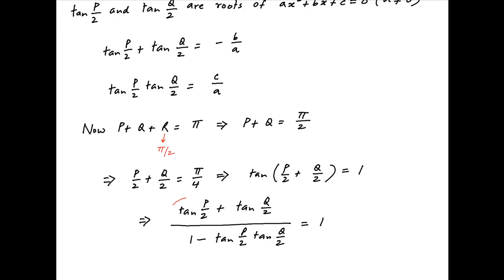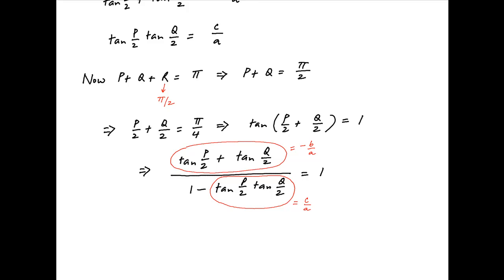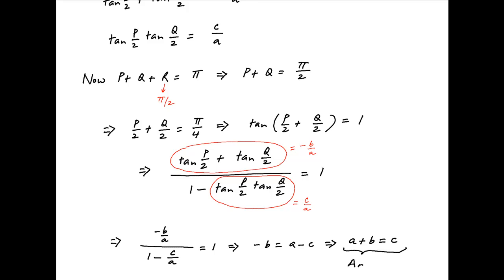In the numerator, the sum tan(p/2) + tan(q/2) = -b/a, and in the denominator, the product tan(p/2)·tan(q/2) = c/a. Substituting: (-b/a) / (1 − c/a) = 1. This simplifies to -b = a − c, which implies a + b = c, which is the required result.